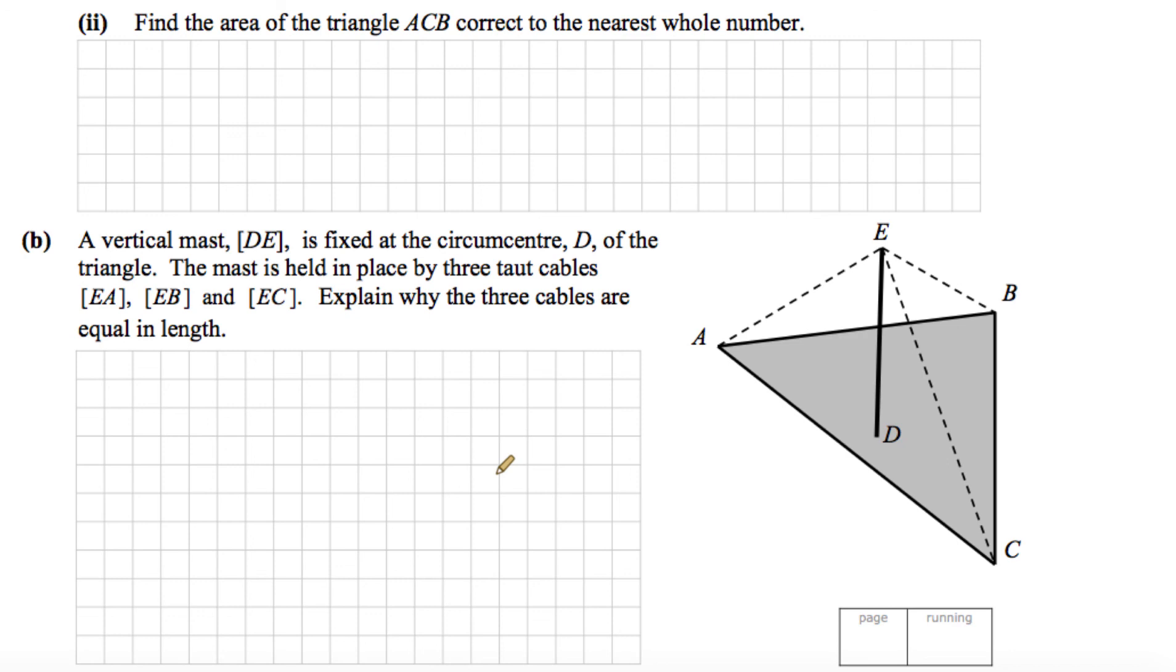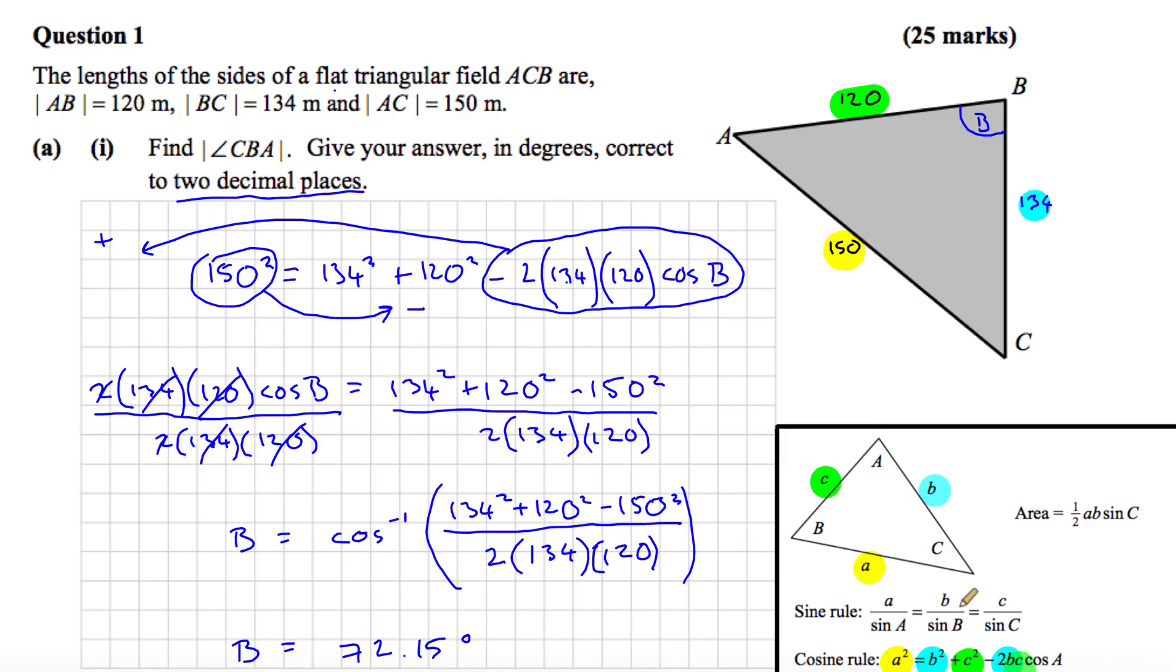Part two says find the area of the triangle ACB correct to the nearest whole number. Well, we've another formula here from the tables book, which says that the area is equal to half AB by the sine of the angle C. In other words, half the multiplication of two sides by the sine of the angle that's between those two sides.